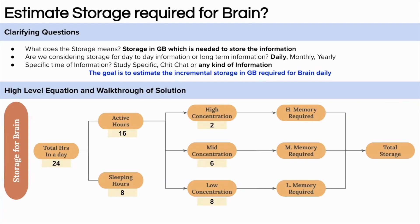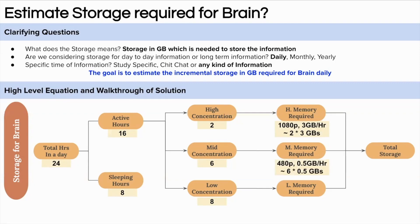Coming back to the question — we need to convert the concentration levels into storage amounts, and I'm taking an analogy from YouTube. High concentration work is equivalent to a full HD 1080p YouTube video, which consumes around 3 GB per hour, so 2 hours would need around 6 GB. Medium concentration is similar to 480p video at 0.5 GB per hour, giving around 3 GB for 6 hours. Low concentration is equivalent to 240p video at 0.25 GB per hour, so 8 hours gives 2 GB. Adding all of them: approximately 11 GB per day is required for incremental memory storage for a human brain.